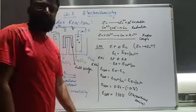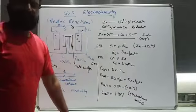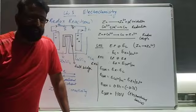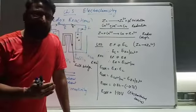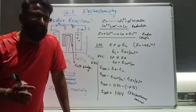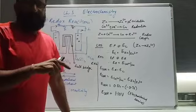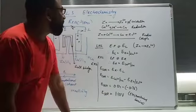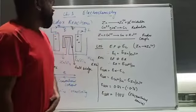Today we are starting chapter number three, that is electrochemistry. You know what is the meaning of electrochemistry? It is a branch of chemistry which deals with the study of obtaining electric current from chemical reactions, or vice versa. We can say that chemical energy will be converted into electrical energy, or vice versa. So that will be studied under this branch of chemistry — electrochemistry. It is a topic of your whole chemistry.